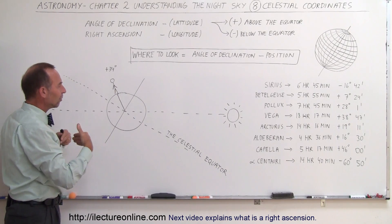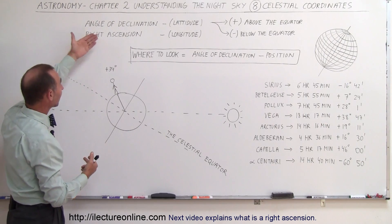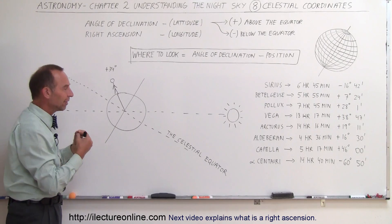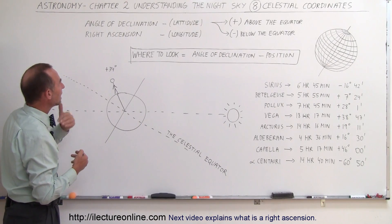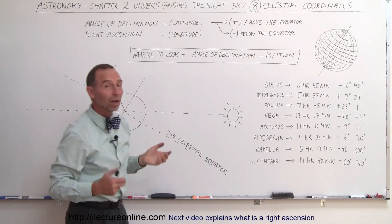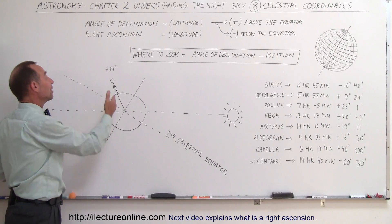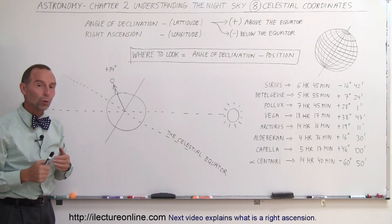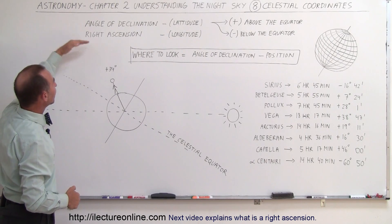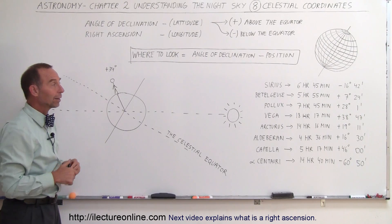Anything above the celestial equator will have a positive angle of declination; anything below will have a negative angle of declination. Now, we're going to be observing things from some position on the Earth. I happen to live very near 34 degrees north of the equator, near Los Angeles. So the angle of declination from my position is 34 degrees north of the equator.